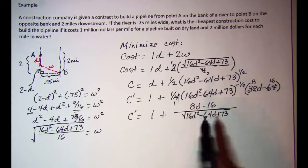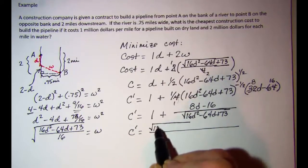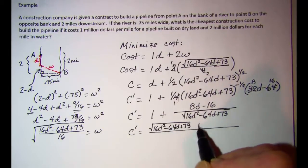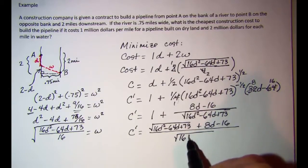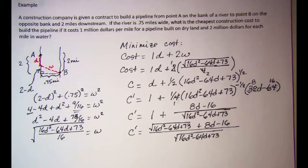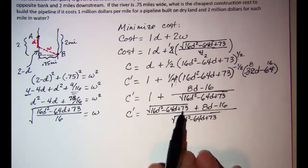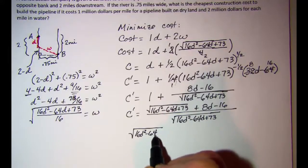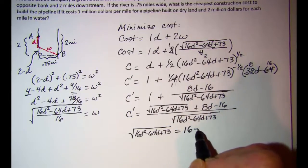Getting a common denominator, C′ = [√(16D² − 64D + 73) + (8D − 16)] / √(16D² − 64D + 73). To find the minimum, we set the derivative equal to zero. This means √(16D² − 64D + 73) = 16 − 8D.